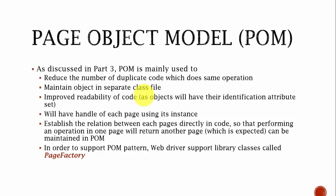Page Object Model, discussed in Part 3, is mainly used to reduce the number of duplicate codes which do the same operation. It maintains objects in separate class files, which also improves the readability of your code since you store all the objects there and their identification attributes are set for the same properties. POM also has a handle for each page using its instances.